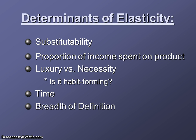Finally, breadth of definition matters. For example, demand for skim milk is more elastic than demand for milk in general because there are more choices — 2%, 1%, whole milk, soy milk, almond milk. Milk in general is a broader category, so demand for milk would be more inelastic, while demand for skim milk would be more elastic if you were comparing the two.